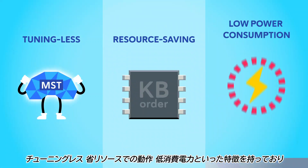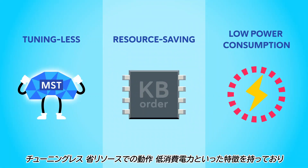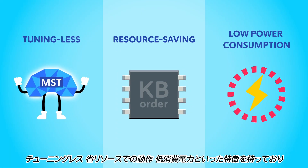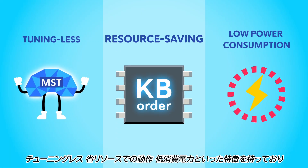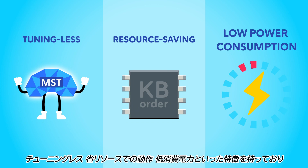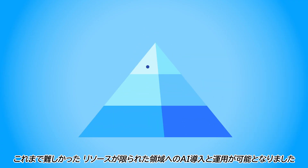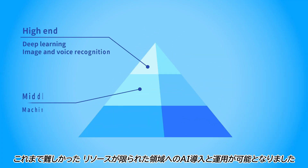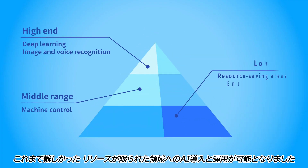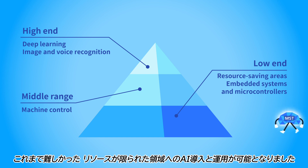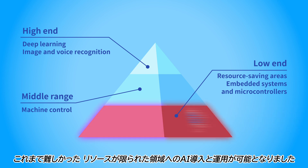Features of MST, such as tuning-less, resource-saving operation, and low power consumption, make it possible to introduce and operate AI in areas with limited resources that were previously difficult to do so.